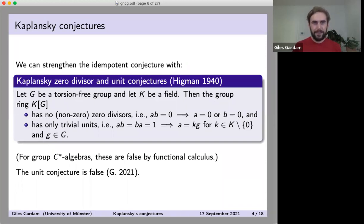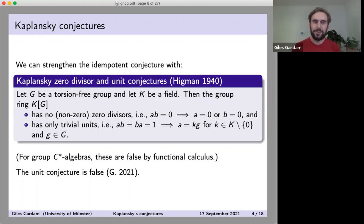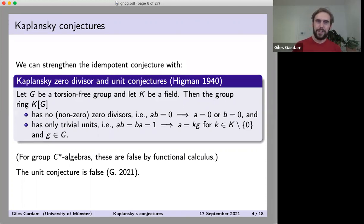Unlike the idempotent conjecture, it doesn't make sense to ask the zero divisor and unit questions for C*-algebras; those seem to be false very quickly by functional calculus because there's extra freedom in picking two elements or two functions. The unit conjecture we now know, as of my paper from this year, is false — at least in positive characteristic.